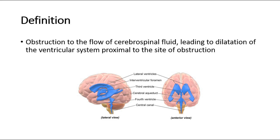This picture shows an overview of the ventricular system, where you can see that there are two lateral ventricles, the third ventricle and the fourth ventricle, and the cerebral aqueduct connects the third and fourth ventricles. So any obstruction at any site in the ventricular system can cause hydrocephalus.